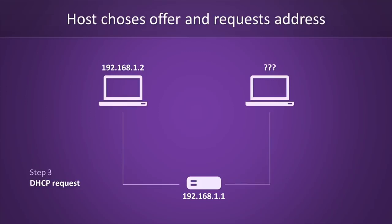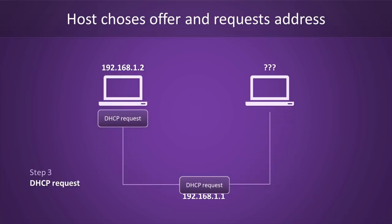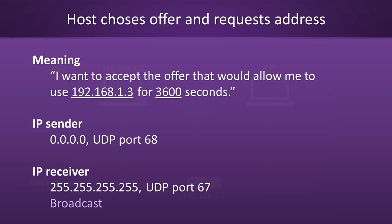Moving on to step number 3. At this point, the host has received at least one offer for an address and it now gets to pick which one it wants. After having done so, it will send out a DHCP request message to everyone on the network — once again, this is a broadcast — and in this message it will say which address it picked. With this DHCP request message, the host expresses its intention to accept a specific offer. In this specific example, the host wants to claim 192.168.1.3 for 3600 seconds, which is equal to 1 hour. Once again, the sender field says 0 because we don't have an address yet. The ports used here are 68 to 67, which is client to server.